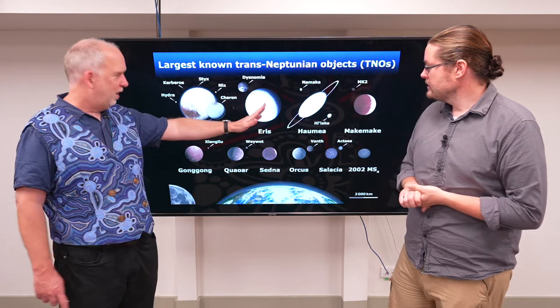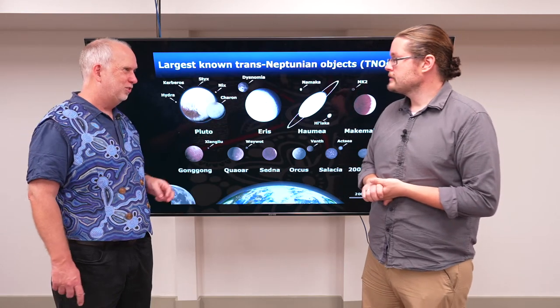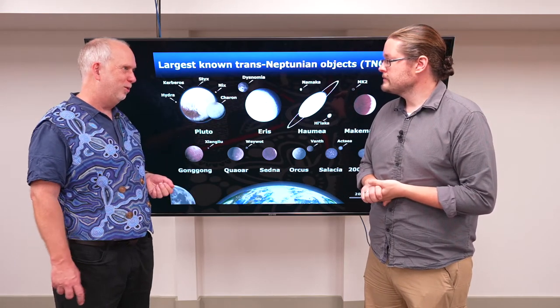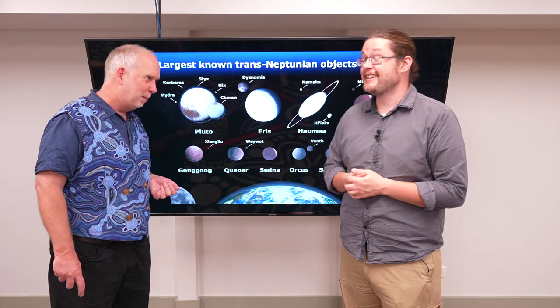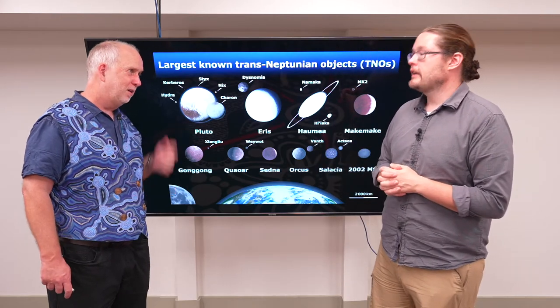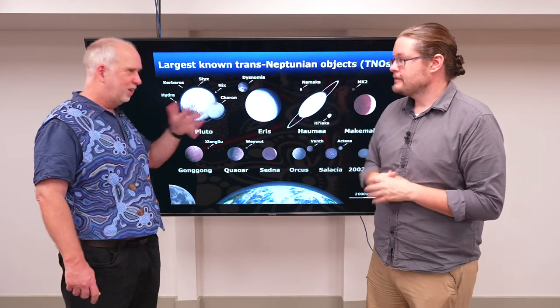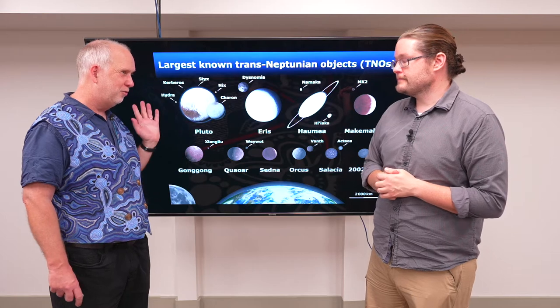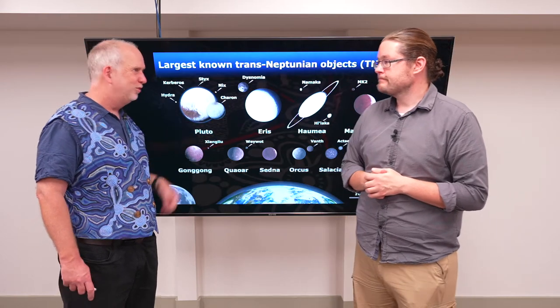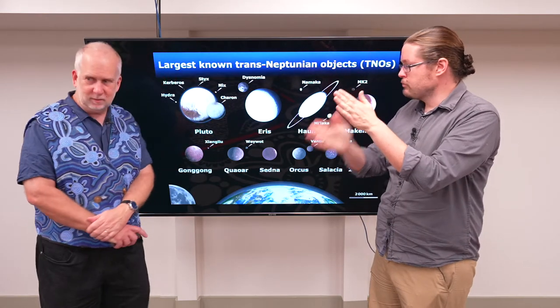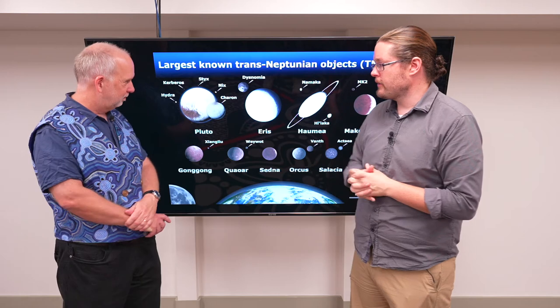Now the reason why Eris wasn't spotted in the same surveys that discovered Pluto is first of all it doesn't happen to be in the same part of the sky where someone wrongly predicted a planet to be. But also it's further out. Not that much further out, but because it's a little bit further out, it's actually much fainter. So even if it had been where Pluto was, you wouldn't have seen it, because it's a really far drop-off as you get to those farther ranges.